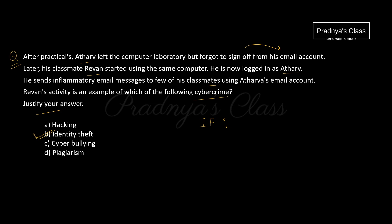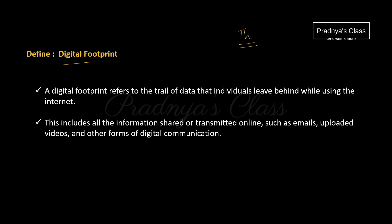Using someone else's identity using gadgets is a case of identity theft — it is illegal and a cyber crime. After MCQs, we have some theory questions. We need to define what is digital footprint. This chapter is completely theoretical, so you can frame your answers in your own words. Digital footprint is the traces of data — the data can be anything: messages, emails, uploaded videos, or any kind of digital communication.